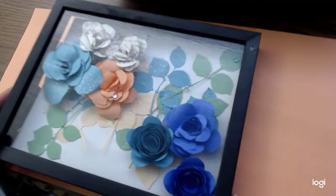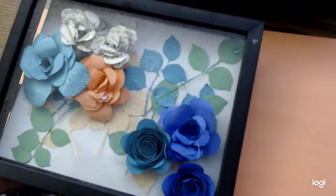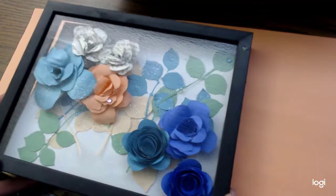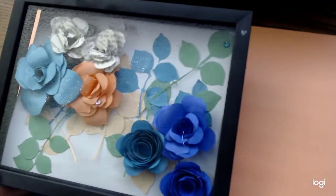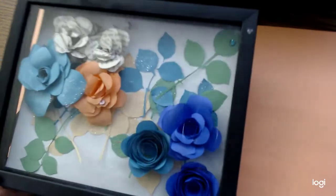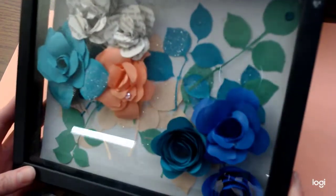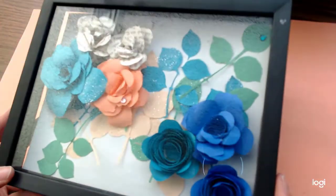And then once you have everything the way you want it, you can go ahead and start gluing down your flowers, however you would like them on the back of your frame. And once you do that, you can just open up your shadow box and put your back of your frame in and it's ready to hang.